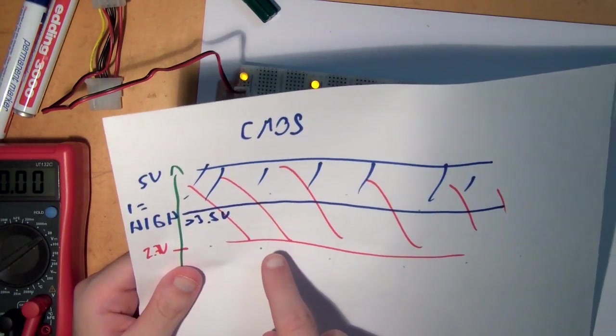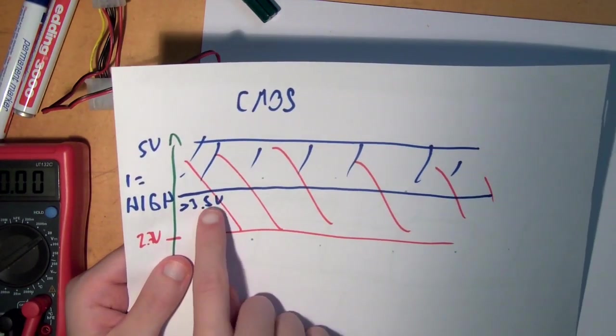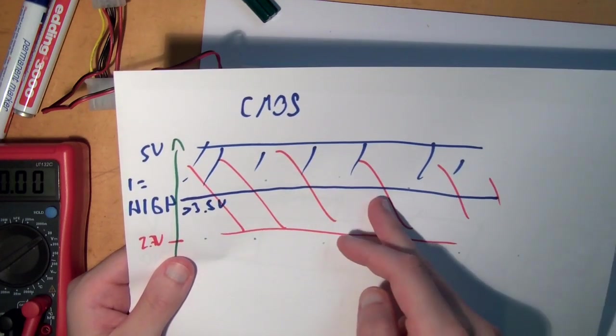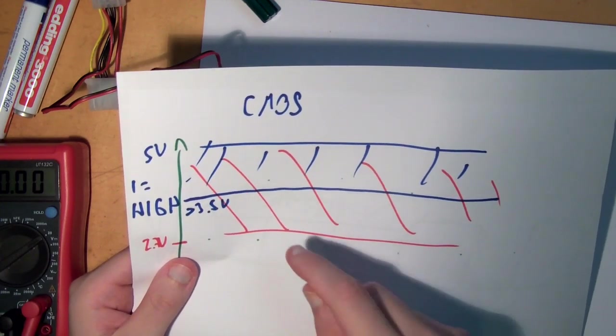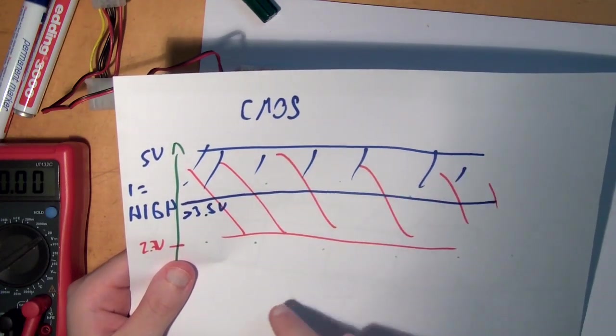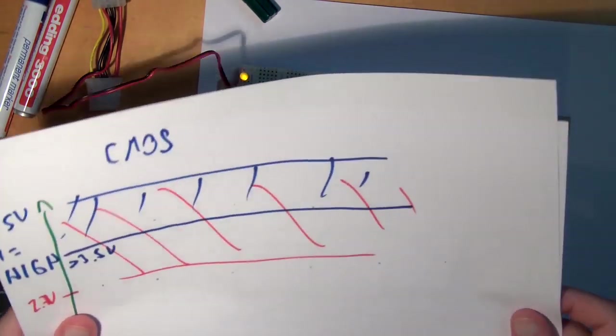I measured the same IC with 3.4 volts, which would be underneath this level, which would not actually be considered high. So 3.7 is a little bit low in my opinion. I want to get a little bit higher. So how do I actually get higher?